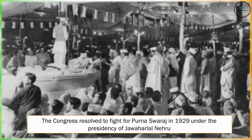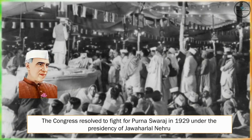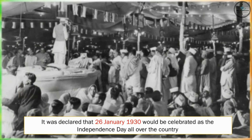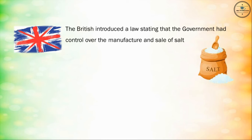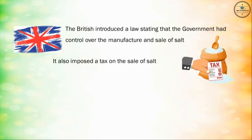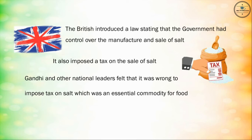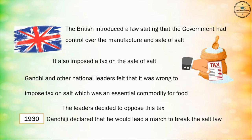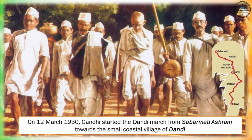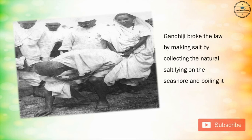The Congress resolved to fight for Purna Swaraj in 1929 under the presidency of Jawaharlal Nehru. Consequently, it was declared that 26 January 1930 would be celebrated as Independence Day all over the country. The British had introduced a law stating that the government had control over the manufacture and sale of salt, and also imposed a tax on its sale. Gandhi and other national leaders felt it was wrong to impose a tax on salt, an essential commodity. In 1930, Gandhiji declared that he would lead a march to break the salt law. On 12 March 1930, Gandhi started the Dandi March from Sabarmati Ashram towards the small coastal village of Dandi. Gandhiji broke the law by making salt — collecting the natural salt lying on the seashore and boiling it.